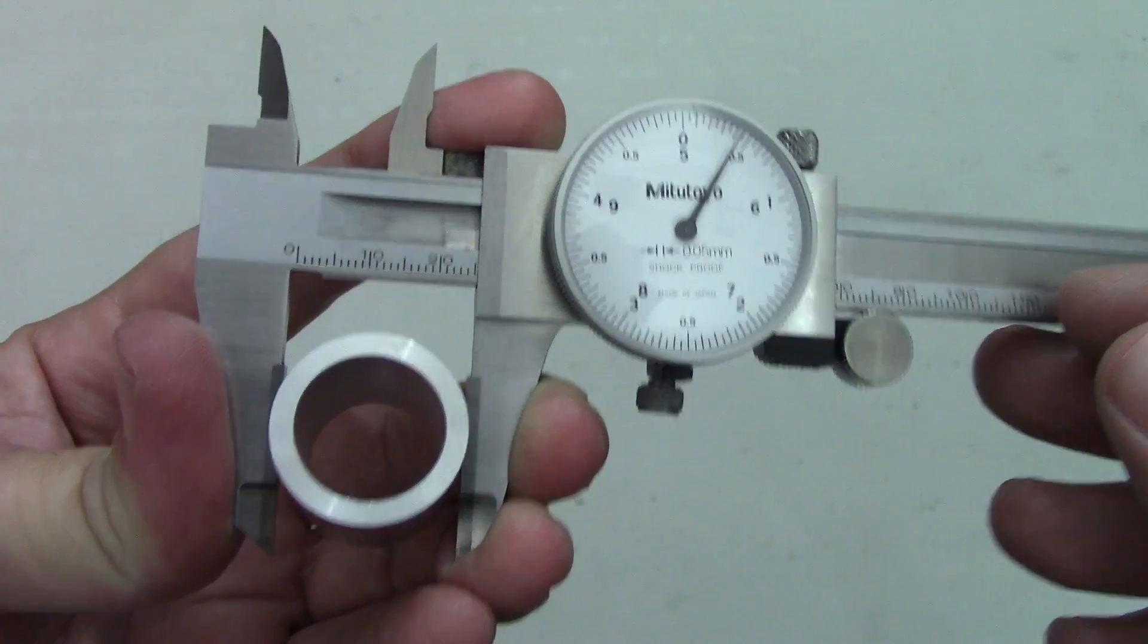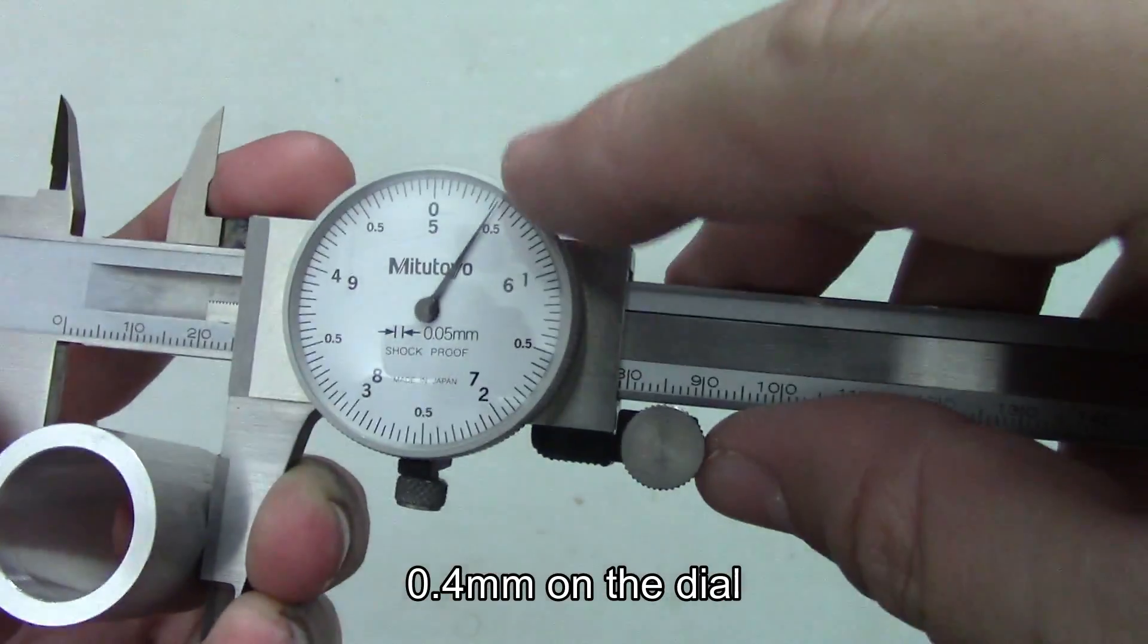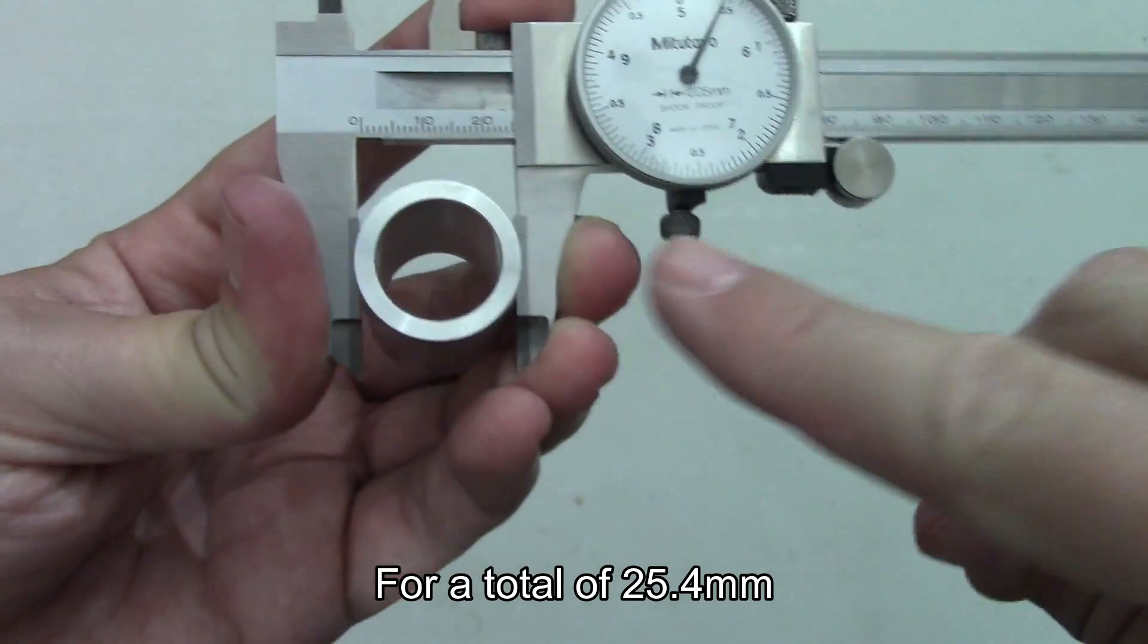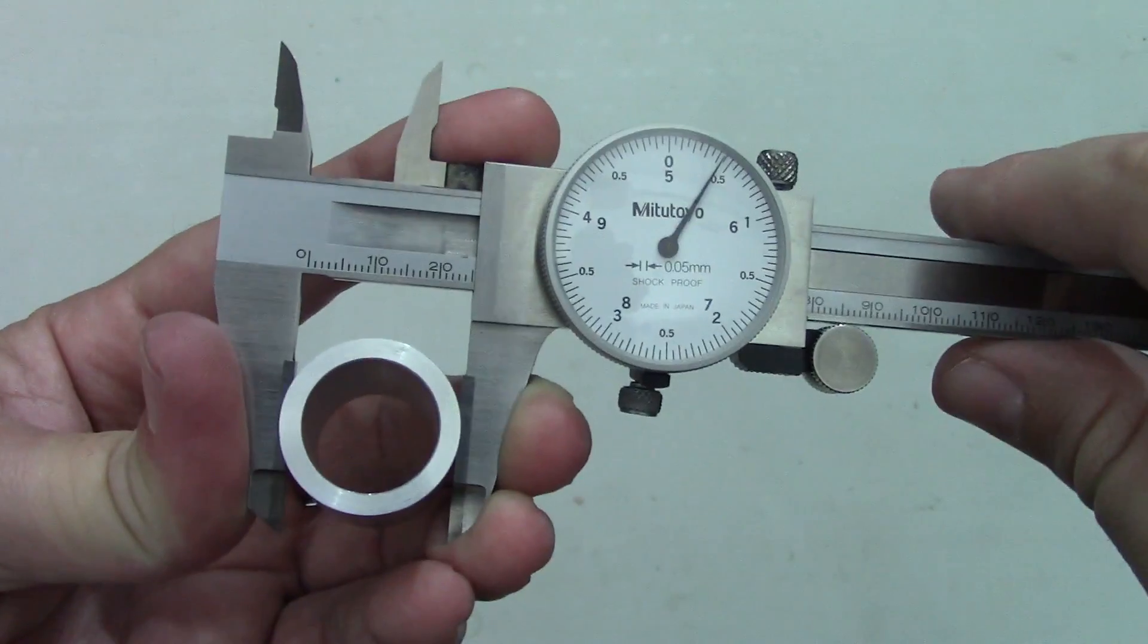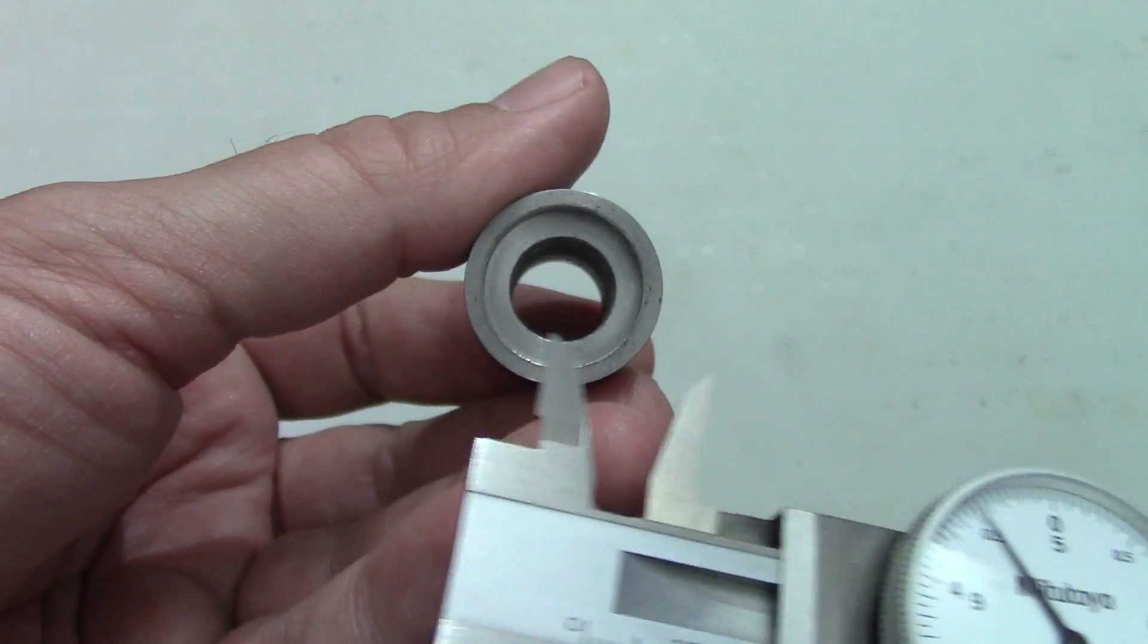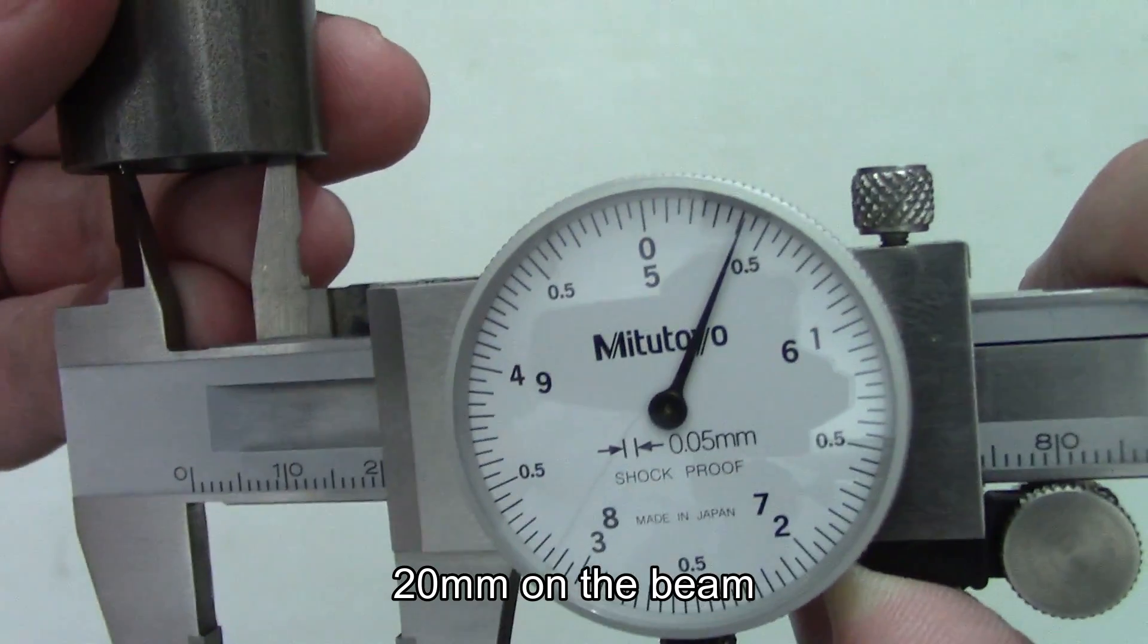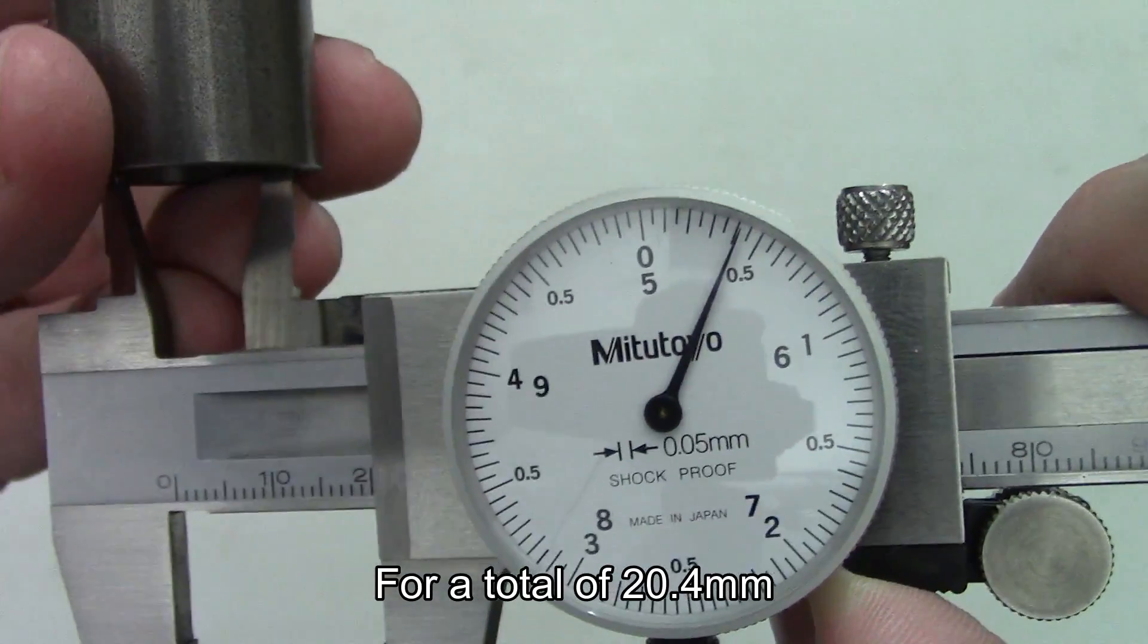Let's look at some sample measurements. On this piece, we have 25 millimeters showing on the beam and another 0.4 and some change showing on the dial, almost 0.45 which makes sense because this is 1 inch diameter stock which is 25.4 millimeters and then there is some tolerance on the size. If we look at the size of this small counterbore here, we can see we have 20 millimeters showing on the beam and another 0.4 millimeters on the dial for a total of 20.4 millimeters.